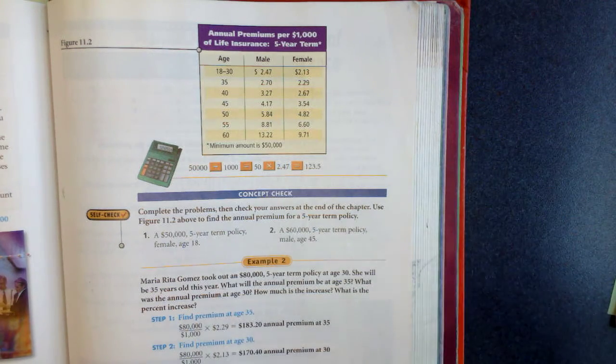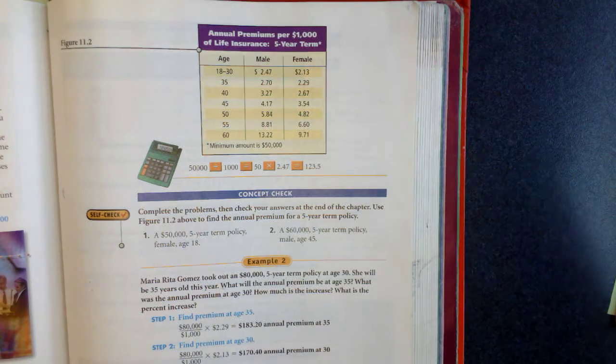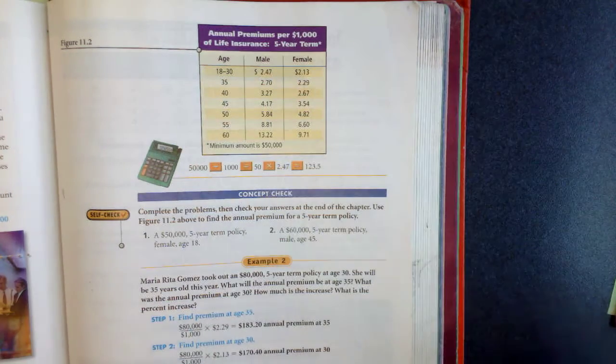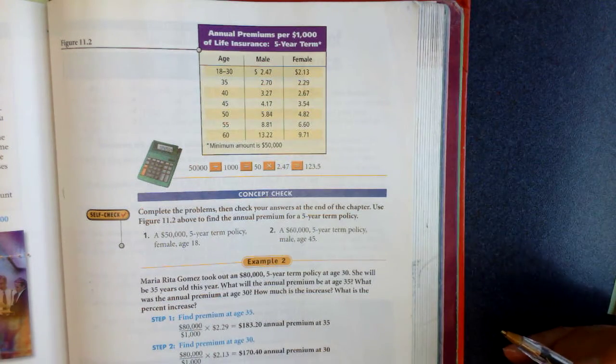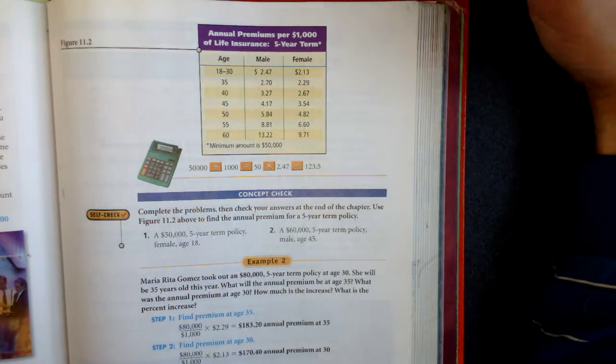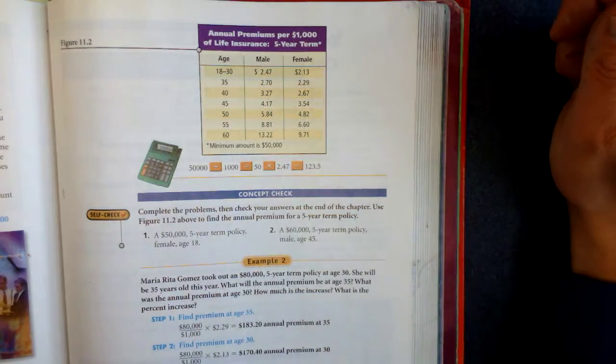At the end of those number of years the term life insurance expires. If you were to die within those certain number of years you would get the insurance payment. But if the insurance expires, if it goes beyond the number of years, then you end up not getting anything from that term life insurance.